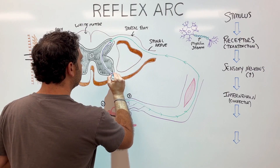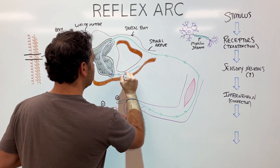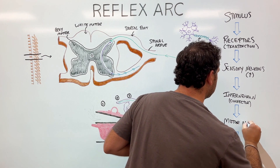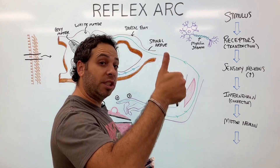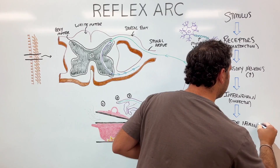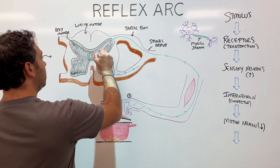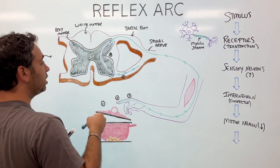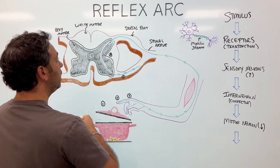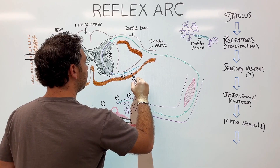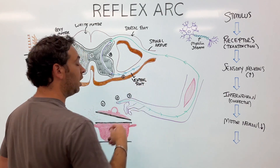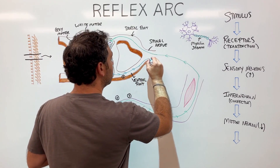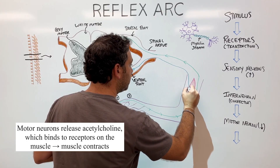The interneuron connects to the motor neuron — number five. Just like the sensory neuron, information travels in one direction, but instead of going toward the brain (afferent), the motor neuron is exiting, going away from the brain. It travels out through the ventral root — ventral means up front — back down toward the muscle, and binds to the receptors on that muscle.